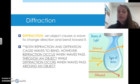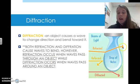All right, diffraction is the third option when it comes to the behavior of waves. Diffraction of an object causes a wave to change direction and bend toward it. Both refraction and diffraction cause waves to bend. However, refraction occurs when a wave passes through an object, so into an object, and diffraction occurs when a wave passes around an object.